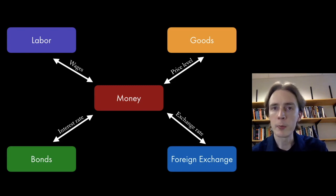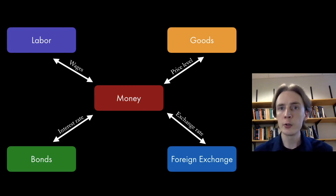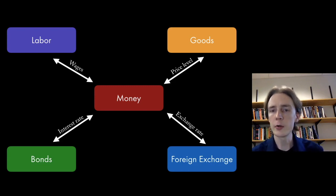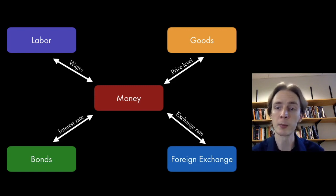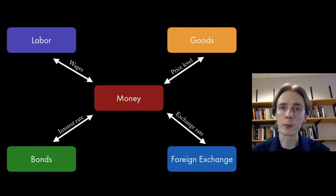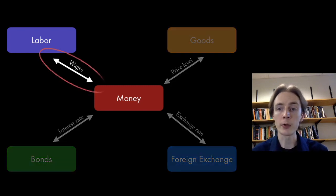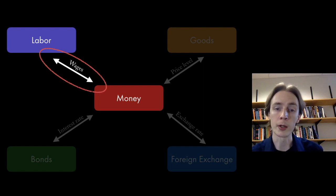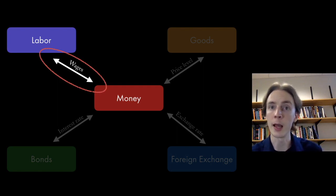We've been talking about business cycles, focused on the market for goods equilibrated by the price level. Today we're taking a diversion to talk about the symptoms of business cycles, mainly about labor and productive resources. Just like the price level equilibrated the market between money and goods, wages are going to equilibrate the market between money and labor.